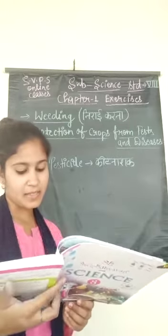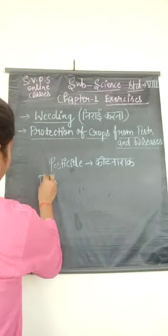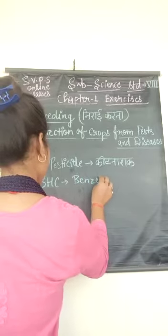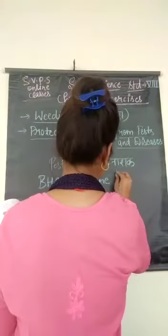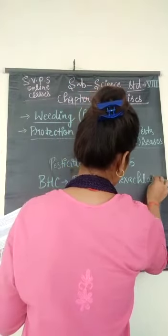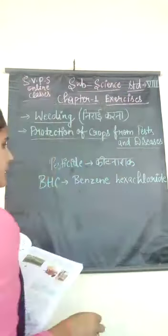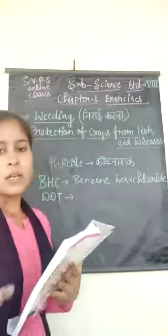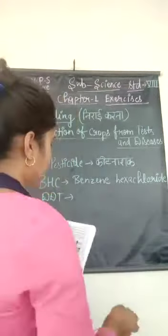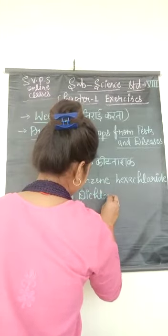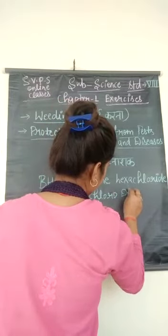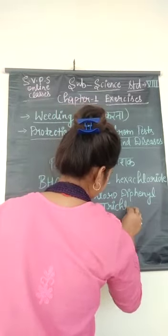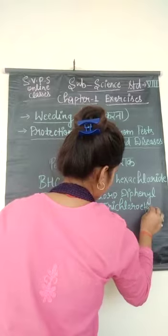Some common insecticides are BHC, which stands for benzene hexachloride, and DDT, which stands for dichloro diphenyl trichloroethane.